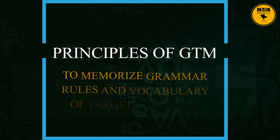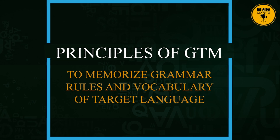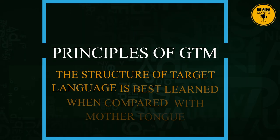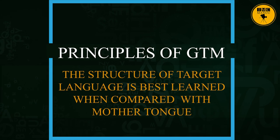The second principle: to memorize grammar rules and vocabulary of the target language through previous knowledge of grammar and vocabulary of the mother tongue. The target language grammar and vocabulary will be learned with the help of mother tongue knowledge. The third principle: the structure of the target language is best learned when compared with the mother tongue — comparing and contrasting makes it easier to learn.